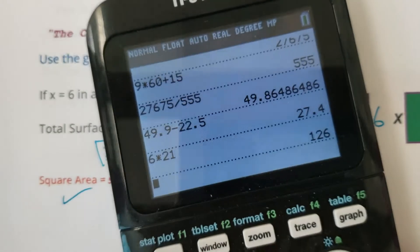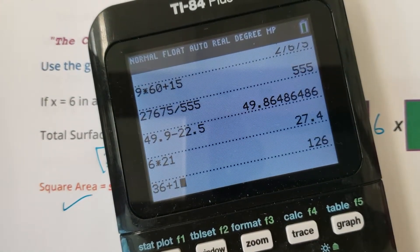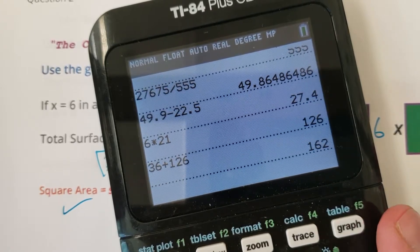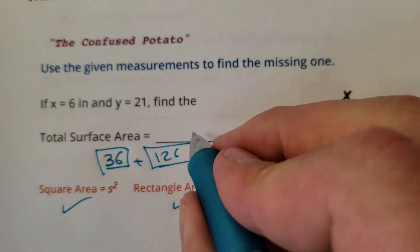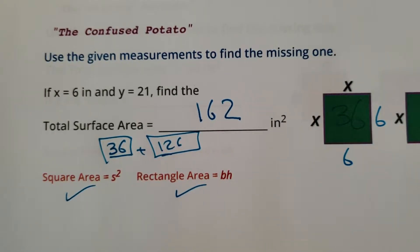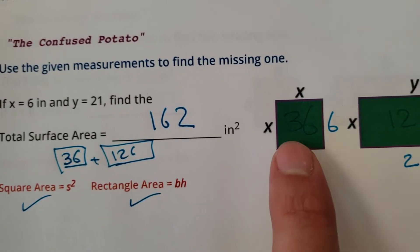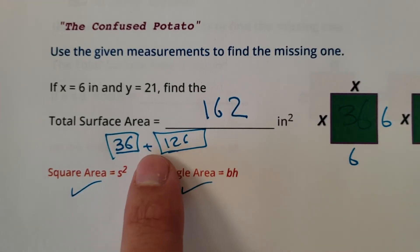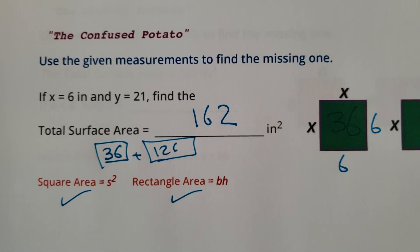Would be a total of that many. There we go, 162. That's the confused potato. All right, all you do is you find the area of the square, you find the area of the rectangle, and add them together. That's it.